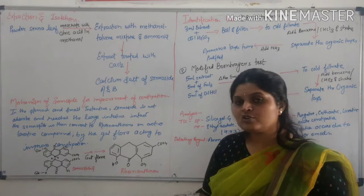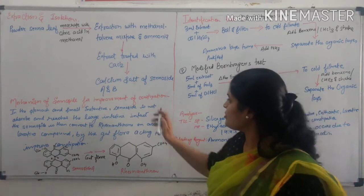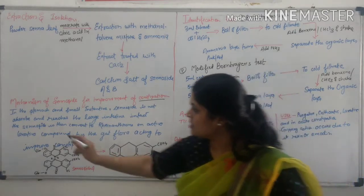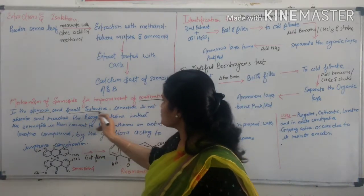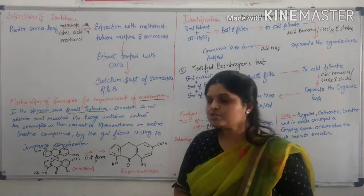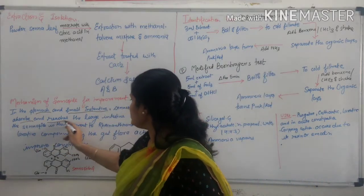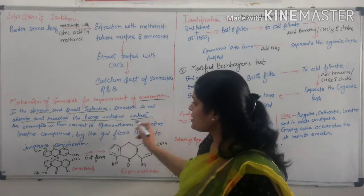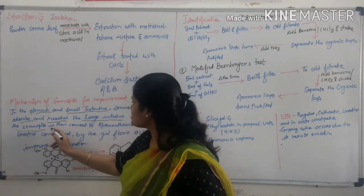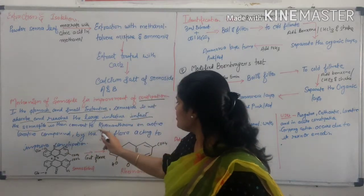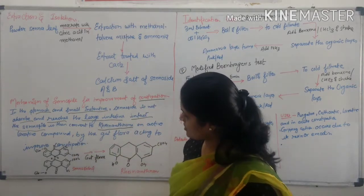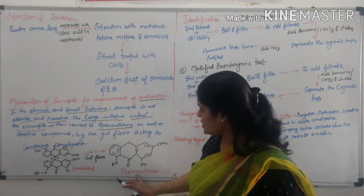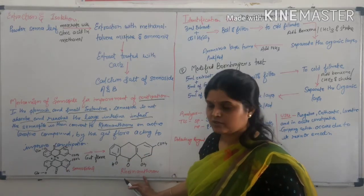Mechanism of sennosides for the improvement of constipation: In the small intestine, sennoside is not absorbed and reaches the large intestine. In fact, the sennosides are then converted into rhein anthrone. That means sennosides, in the presence of gut flora, are converted into rhein anthrone.